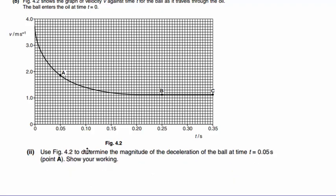Part II wants us to use this graph to find the deceleration of the ball at time T equals 0.05 seconds. So to do this, we need to find the gradient of the graph at point A. And to do that, we need to draw a tangent to the line. So here I've drawn a tangent, and I'm going to use the equation here that acceleration is the change of velocity divided by the change of time.